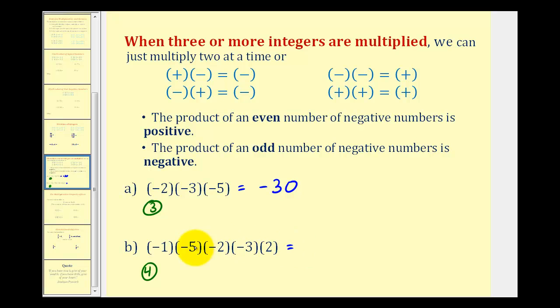And now we can just multiply ignoring the signs or multiply the absolute values. So we have one times five, that's five, times two, that's ten, times three, that's thirty, times two, equals sixty.